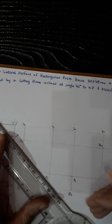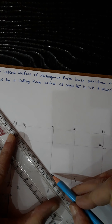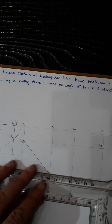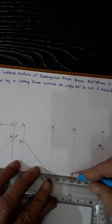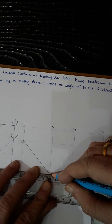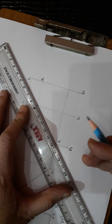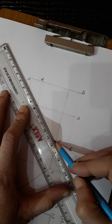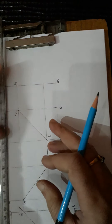Now join these points with a straight line: Q₁ to P₁, then P₁ to P₂ — make it thick. Then P₂ to Q₂, and then Q₂ back to Q₁. Make all these lines thick.